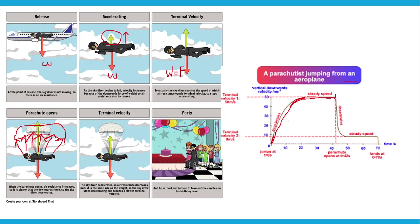On the velocity-time graph: initially the skydiver accelerates at 9.8 m/s², then the curve flattens as air resistance catches up, reaching the first terminal velocity when parachute is still closed. When the parachute opens, there is a sudden increase in surface area causing a sudden increase in air resistance, producing a deceleration phase on the graph. After the parachute stabilizes, air resistance decreases back to equal weight, and the skydiver reaches a second, slower terminal velocity before landing. There are therefore two terminal velocities in this scenario.